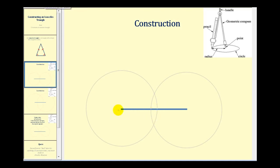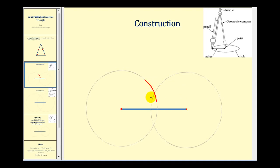We put the point of the compass on one endpoint and the pencil past the midpoint of the segment, then swing an arc above the segment. Without adjusting the compass — keeping the same radius — we take the point and place it on the other endpoint, then swing another arc above the segment.